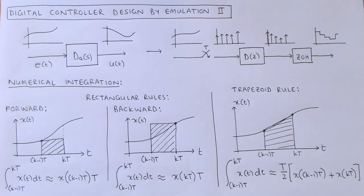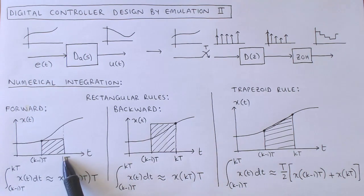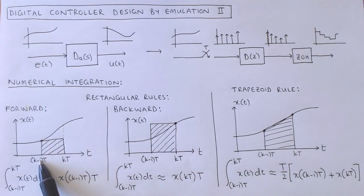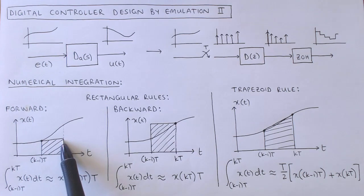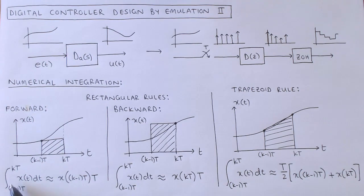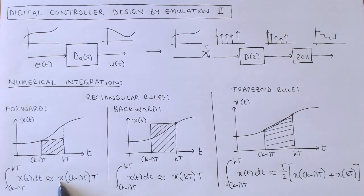For the forward rectangular rule, the function x over the interval is approximated by the value of function x at the start of the interval. The integral of function x over the interval is then approximated by the value of x at the start of the interval times the length of the interval. Mathematically, this approximation is written as the integral of function x over the interval, approximated by the value of x at the start of the interval times the length of the interval.